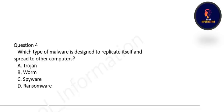Next question: which type of malware is designed to replicate itself and spread to other computers? Options are trojan, worm, spyware, or ransomware. The correct option is B — a worm is malware designed to replicate itself and spread to other computers.